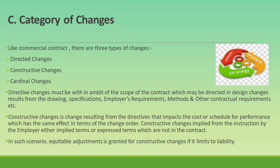Directed changes must be within the ambit of the scope of the contract. These changes may involve design modifications resulting from drawings, specifications, employer's requirements, methods, and other contractual requirements. They are typically issued by the engineer or employer's representative under the authority granted by FIDIC Clause 13, and any adjustments to the contract price or timeline must be negotiated and agreed upon. Constructive changes occur when directives impact the cost or schedule of performance, effectively altering the contract terms. These result from implied or expressed instructions by the employer that are not formally recognized as change orders but have the same effect, such as delays in providing access to the site or necessary information.